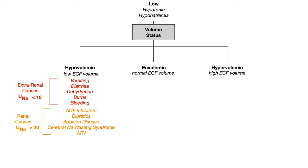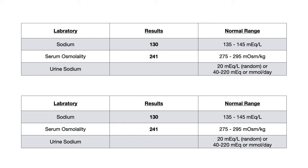Here are two examples of lab printouts you could see on your exam. Sodium and serum osmolality will be the same value whether it's an extra-renal or renal cause. What you need to look for is the urine sodium value. If urine sodium is low — say 12 — that indicates an extra-renal cause. If urine sodium is greater than or equal to 20, that indicates a renal cause of hypovolemic hypotonic hyponatremia.